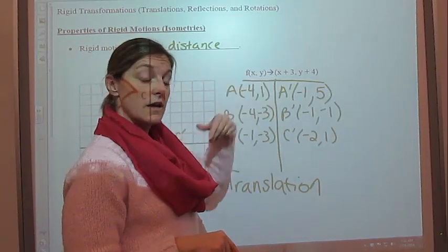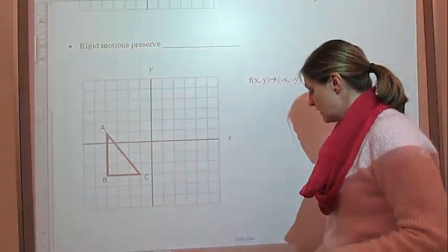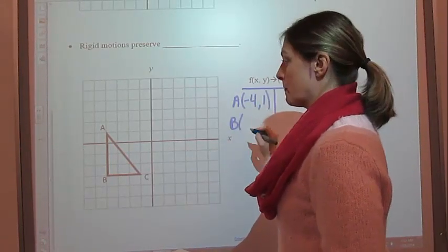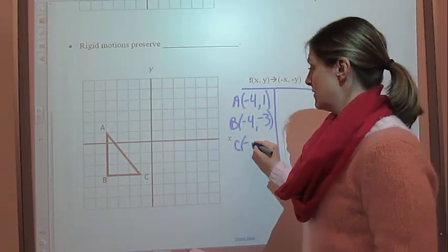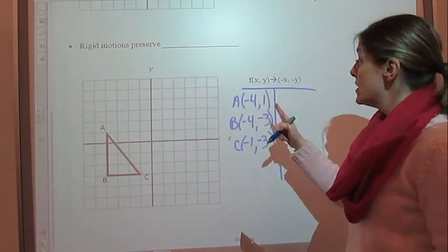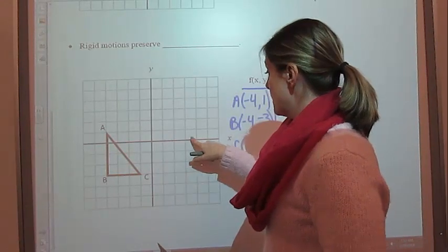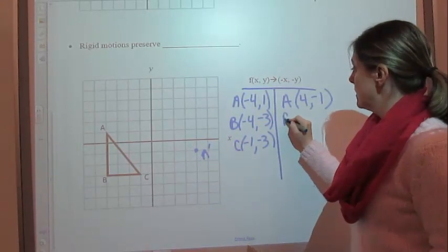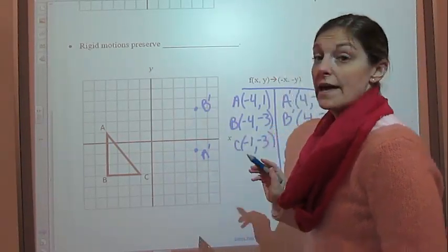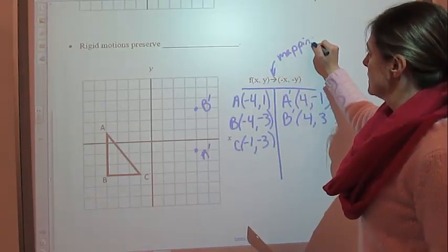It's a translation because we shifted to the right and up. Now let's take a look at another one — we're just going to use the same triangle again. So again, A was negative 4, 1; B was negative 4, negative 3; and C was negative 1, negative 3. So now our change is going to be that our x value becomes negative and our y value becomes negative. So for A, that's going to make the 4 positive and the 1 negative — so we go 1, 2, 3, 4, down 1. So there's A prime. B prime is going to be 4, 3 — so go over 4 and up to 3. And there's your B prime. A is mapped onto A prime, B is mapped onto B prime — that's the mapping.